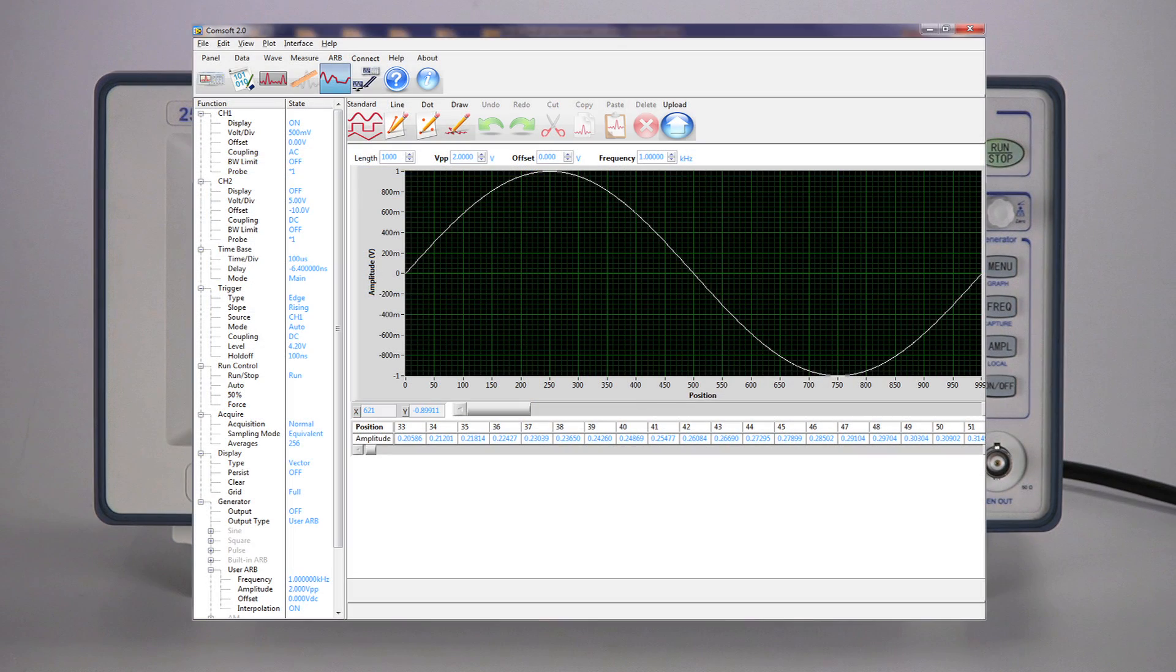Available ComSoft PC software offers control of all scope parameters via a PC as well as the ability to capture, save, and analyze measurement results.